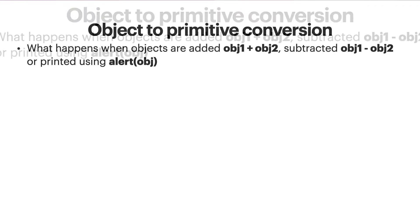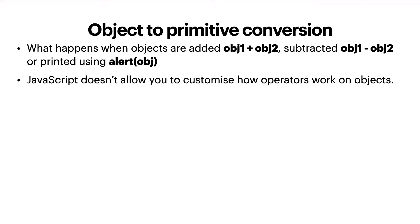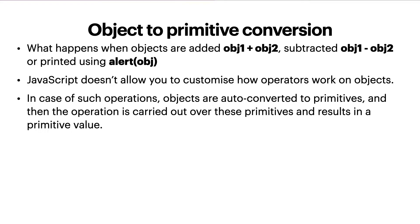Let's dive into the lecture. What happens when objects are added — for example, we have two objects, object one and object two, and we want to add those, or when we want to subtract objects, or alert an object? JavaScript doesn't allow you to customize how operators work on objects. Unlike some other programming languages such as Ruby or C++, we can't implement a special object method to handle addition or other operators. In case of such operations, objects are auto-converted to primitives and then the operation is carried out over these primitives.